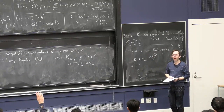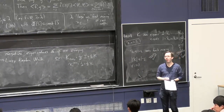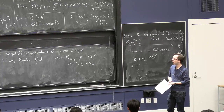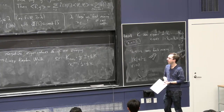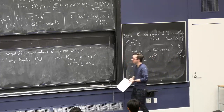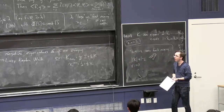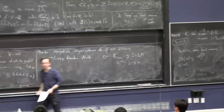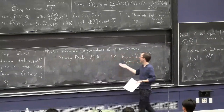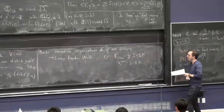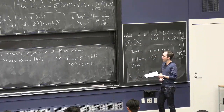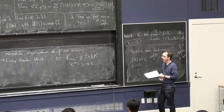Question from audience: What are situations in which you wouldn't be able to use the lazy random walk? Answer: There aren't any really, unless you're extremely concerned about nailing the constant factors, in which case maybe you'd be unwilling to pay a factor of two.